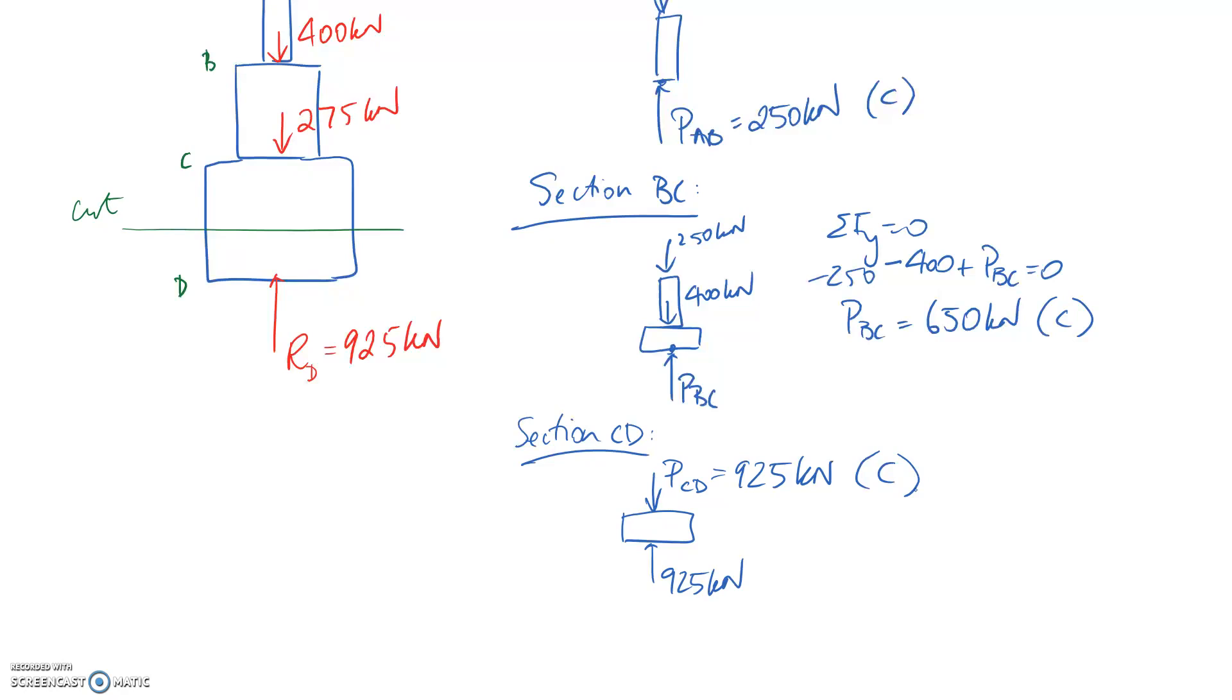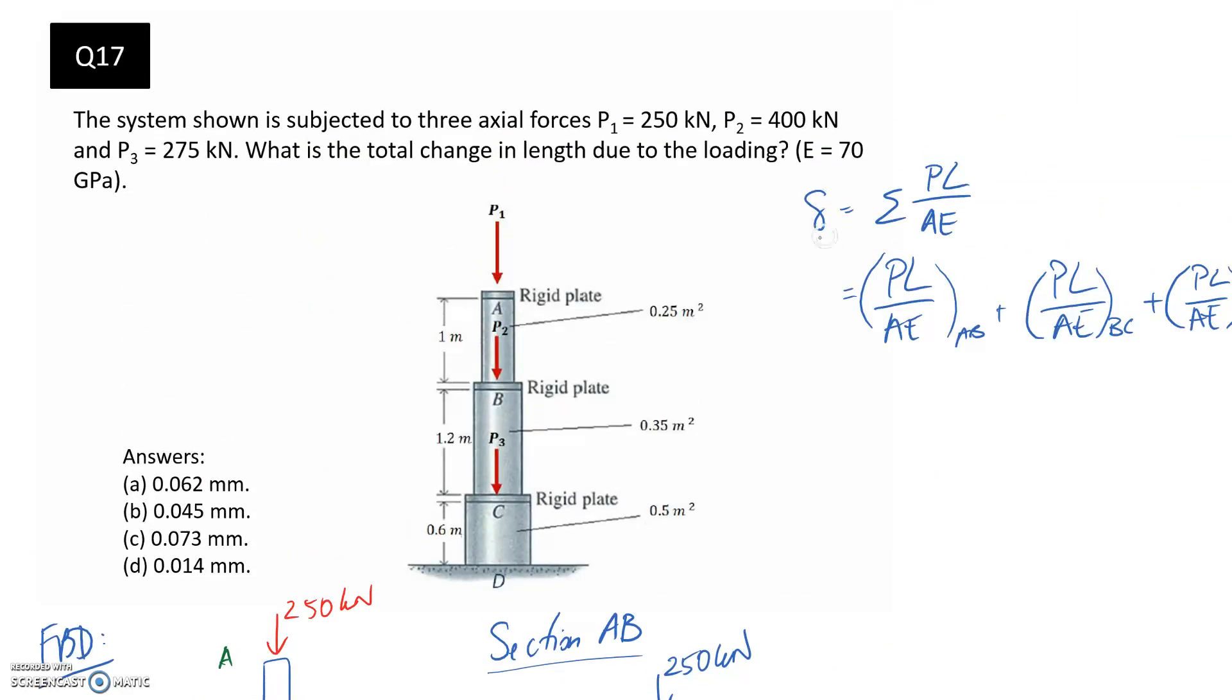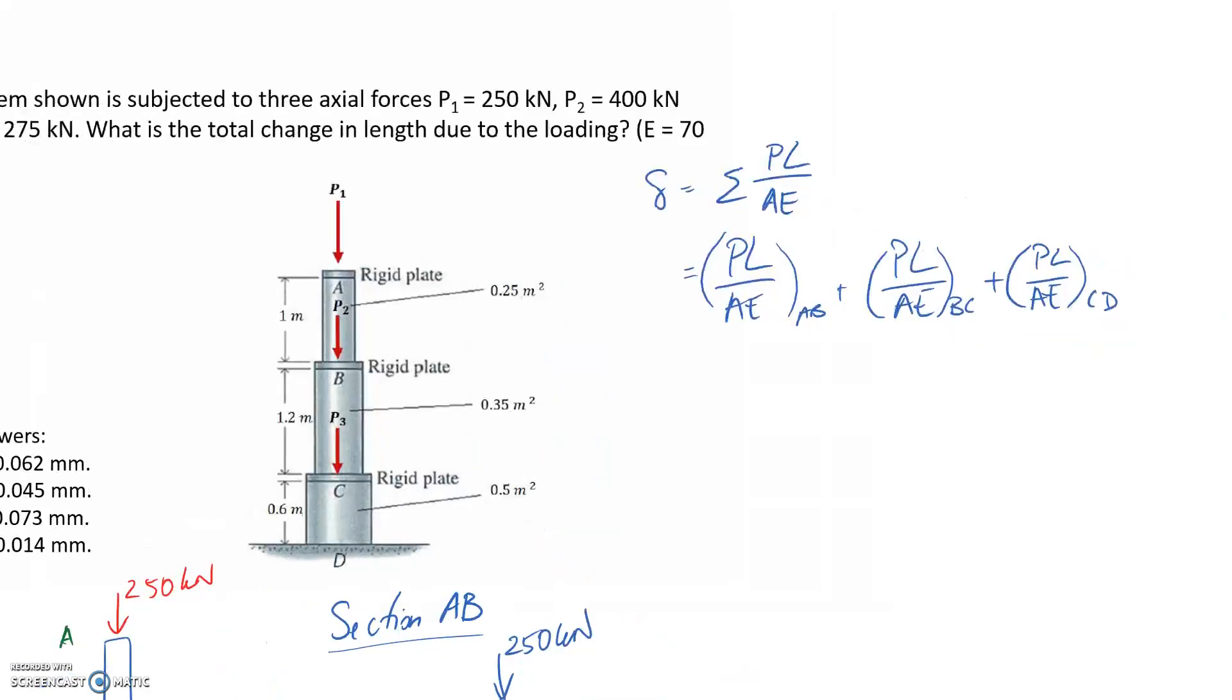We now know the internal load in each of our different parts, so we can go back and substitute into our axial deformation equation. Everything else is pretty much given. The length we know for each section, the area we know for each section, and Young's modulus is 70 gigapascals.